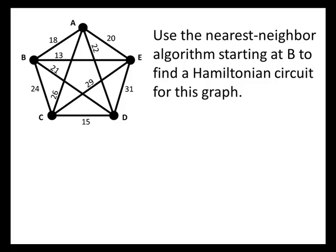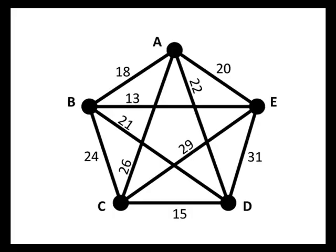But what happens if we change the starting point? Here's the same graph, but now we're being asked to use the nearest neighbor algorithm starting at B to find a Hamiltonian circuit. And what we'll see is that we don't get the same answer. So our starting point is now B. From B, what's the lowest cost edge? It's the edge from B to E costing 13.